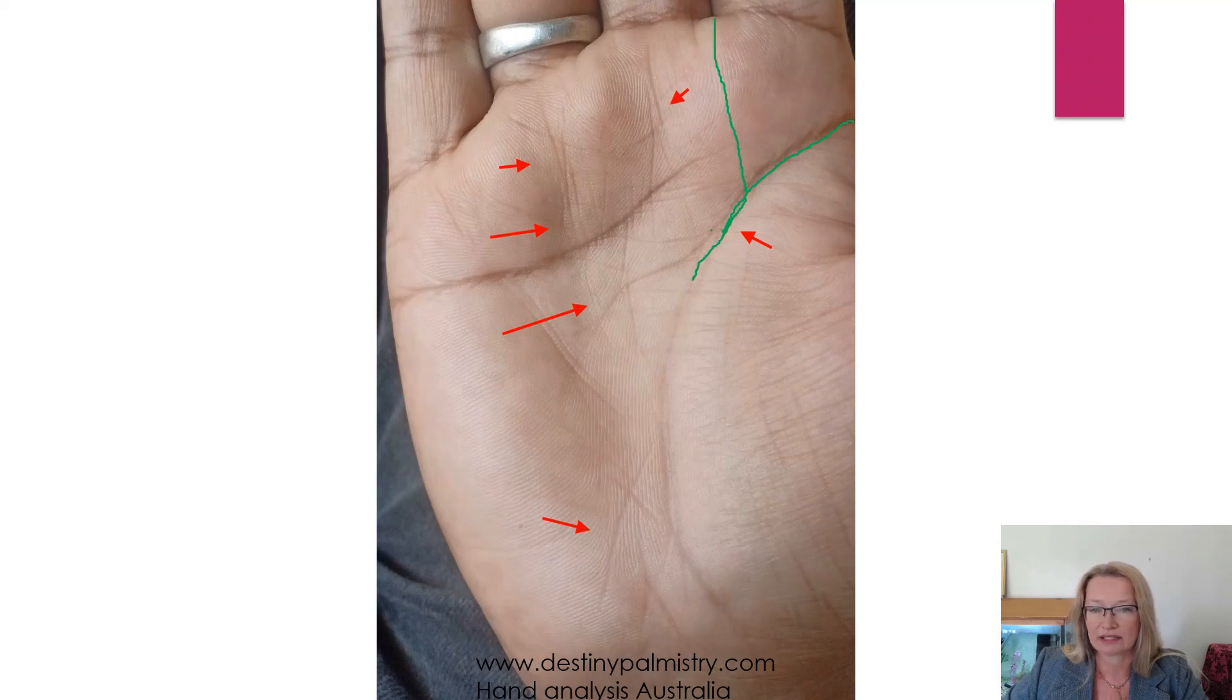So that shows that the independence might come later for this person. The headline is slightly wavy and it's kind of being pushed up by the fate line. So that's indicating a shift, a change by the time age 35 comes along.